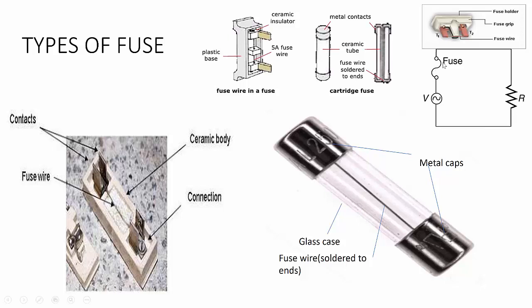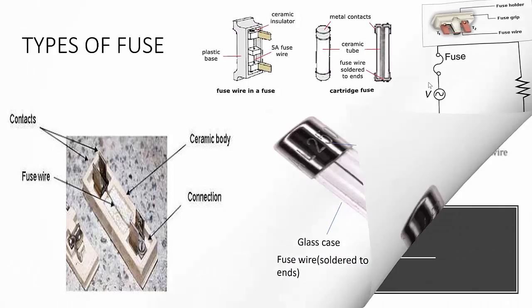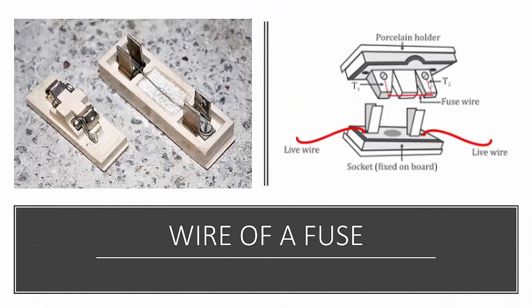This is the circuit symbol for a fuse. Now let's see the construction of the most common fuse. There is a wire F which is stretched between two metallic terminals T1 and T2 in a porcelain holder, since porcelain is an insulator of electricity. This holder fits into a porcelain socket having two metallic terminals to each of which a live wire of the circuit is connected. Thus the fuse wire gets connected in the live wire.